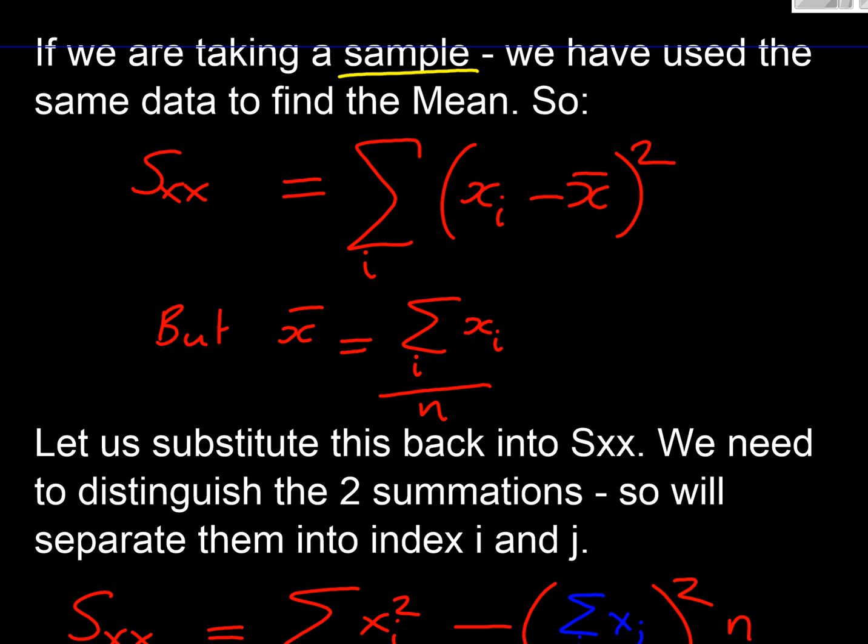It's arising from the fact that we're sampling. So our sum of squares here is our individual x's minus x bar here in the bracket all squared. But of course if we're sampling, the x bar is also coming from the same data, the sum of the x's divided by n.